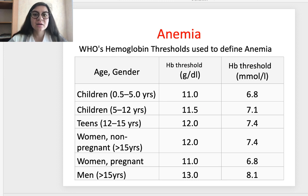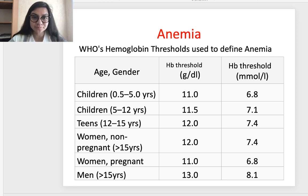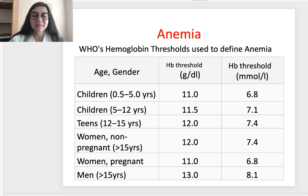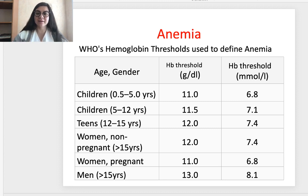The severity of anemia according to the World Health Organization uses hemoglobin thresholds by age and sex. For children under 5 years it is 11 g/dL; for children under 12 it is 11.5 g/dL; for teenagers under 15 it is 12 g/dL; for non-pregnant women it is 12 g/dL; for pregnant women it is 11 g/dL; and normal for men is 13 g/dL.